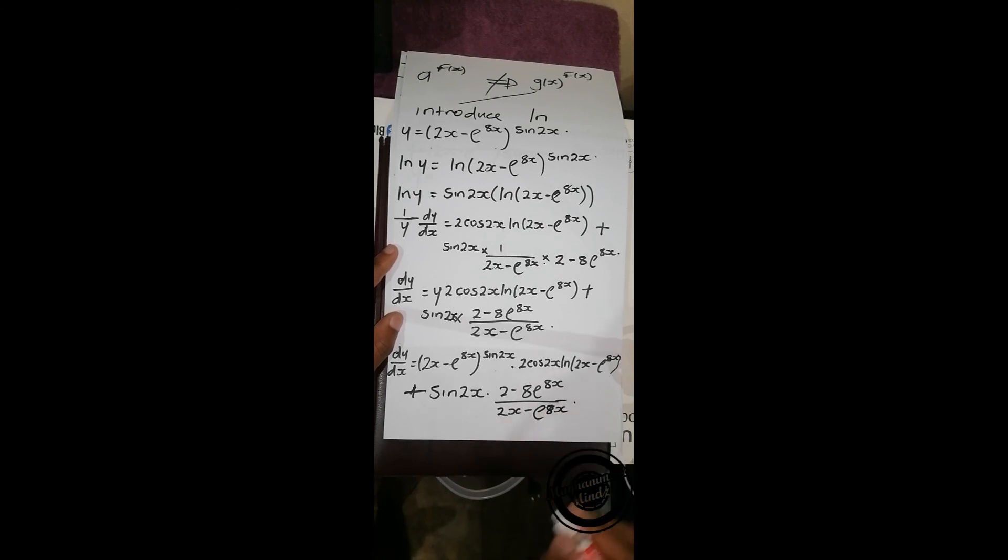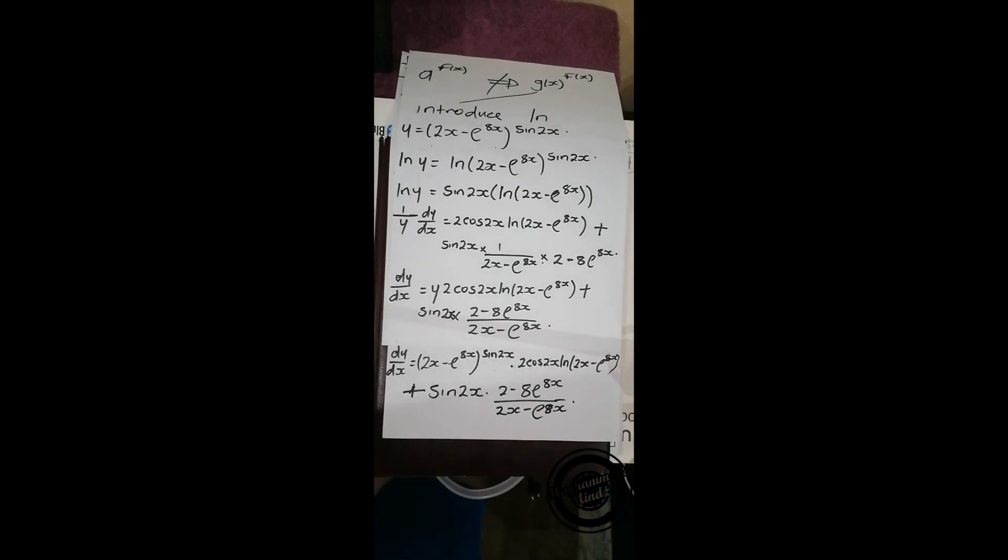So you'll realize that your derivative is going to be (2x - e^(8x))^(sin 2x) times [2cos(2x) · ln(2x - e^(8x)) + sin(2x) · (2 - 8e^(8x))/(2x - e^(8x))].